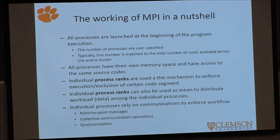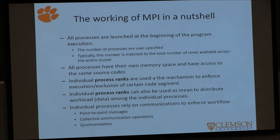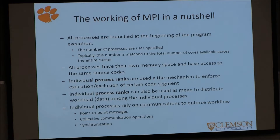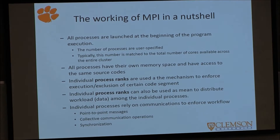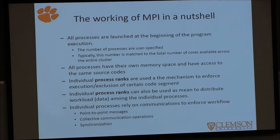Typically, you want to have as many processes as the number of physical cores you have across the entire cluster. For example, if you request two allocations and each allocation has eight cores, you have a total of 16 cores. So you should launch an MPI program with 16 processes. Launching fewer underutilizes the system, and launching more forces some processes back into time-sharing mode, creating inefficiency.